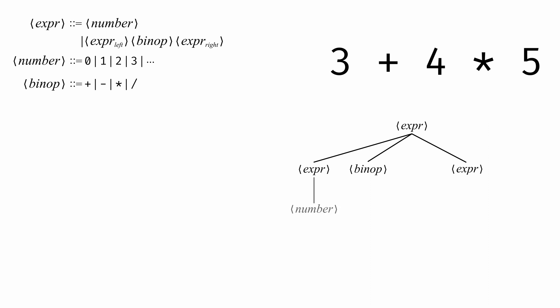The left expression is just a number, and that number is 3. The binary operator is the plus symbol. The right expression is itself formed by a left expression, a binary operator, and a right expression. The left expression is a number, and that number is 4. The binary operator is the multiplication symbol, and the right expression is a number, and that number is 5.